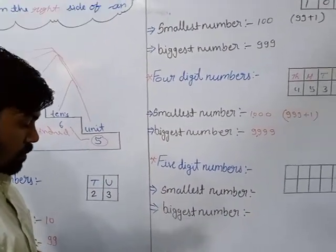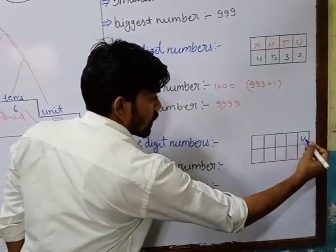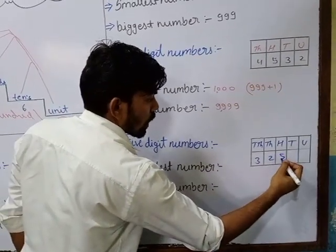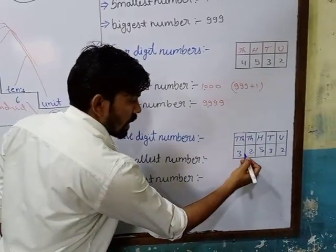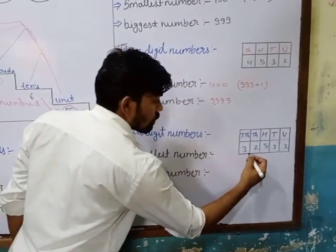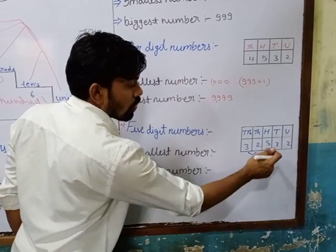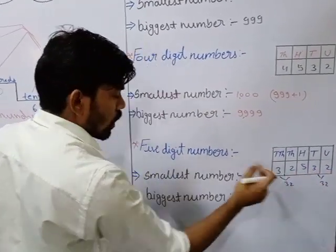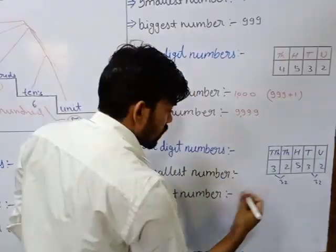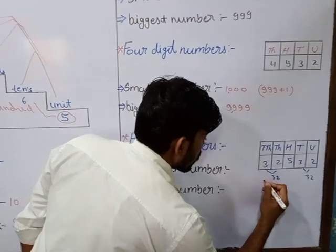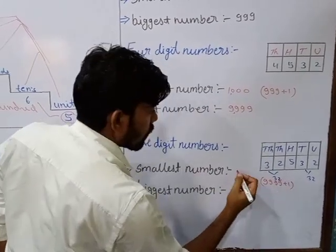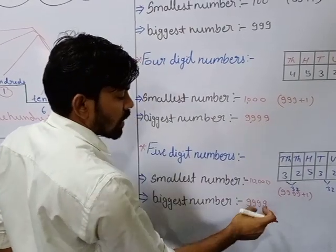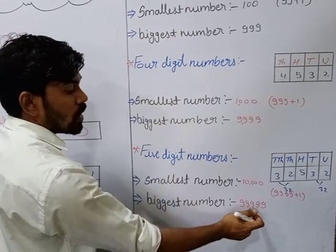Now for the 5-digit number. A 5-digit number has units, tens, hundreds, thousands, and ten-thousands. Take the number 32,532. The thousands and ten-thousands are read together as 32, making 32,000; tens and units together become 32, giving 32,532. The smallest 5-digit number: 9,999 plus 1 becomes 10,000. The biggest 5-digit number: in the previous one we had four 9s, here we add one more 9, giving 99,999.